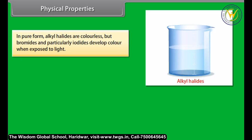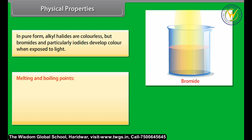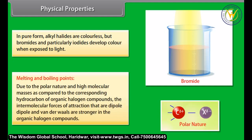In pure form, alkyl halides are colorless, but bromides and particularly iodides develop color when exposed to light. Due to their polar nature and high molecular masses compared to corresponding hydrocarbons, the intermolecular forces of attraction — dipole–dipole and van der Waals — are stronger in organic halogen compounds.